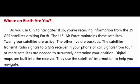Where on Earth are you? Do you use GPS to navigate? If so, you're receiving information from the 29 GPS satellites orbiting Earth. The U.S. Air Force maintains these satellites — 24 are active and the other 5 are backups. The satellites transmit radio signals to a GPS receiver in your phone or car. Signals from 4 or more satellites are needed to accurately determine your position. Digital maps are built into the receiver and use the satellite's information to help you navigate.